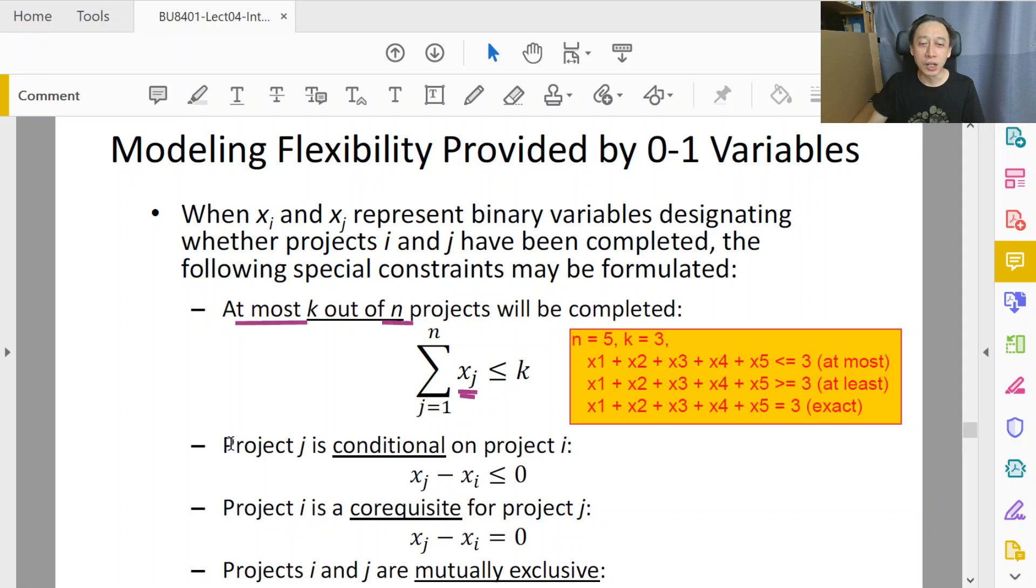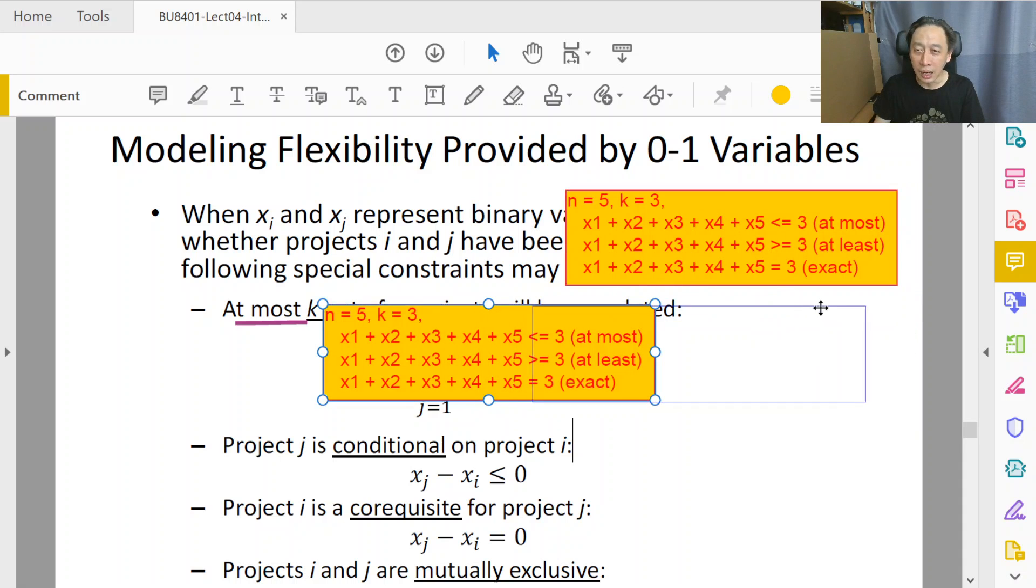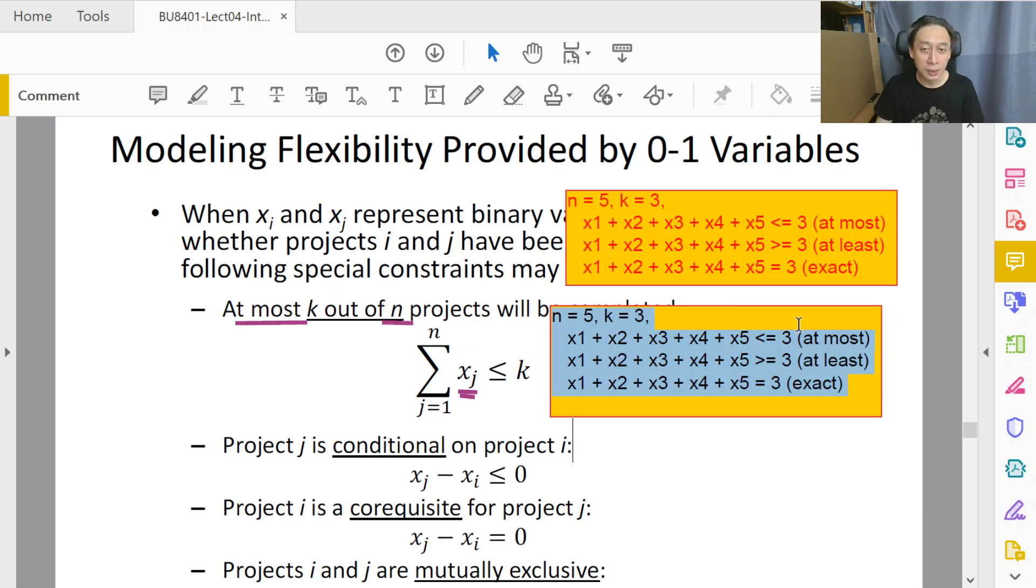All right. So next is project j, that means xj, is conditional upon project i. And this is rather impactful. In other words, you choose project j. You may or may not choose project j, depending on whether you choose project i. So I like to think about it as project i is dominant. That means if project i is not chosen, project j is definitely not chosen. But if project i is chosen, then think about project j because project j may or may not be chosen.